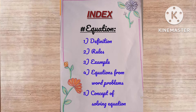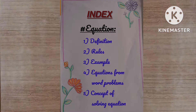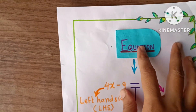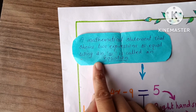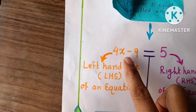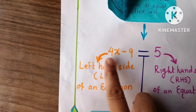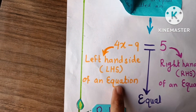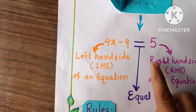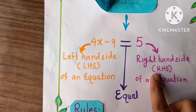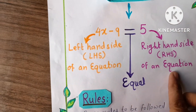The next page is the equation page. Here is the definition of an equation and here is an equation. This side is called the left hand side, what we call LHS of an equation. Here is the equal sign. And this side of the equation is the right hand side, which we call RHS of an equation — means the right hand side of an equation.